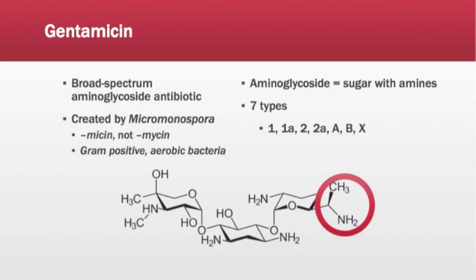Gentamicin comes in seven types, all of which vary only in the specific structure of the circled prosthetic group. In the most widely used formulations, the C1 and C2 subtypes are the most prevalent, with only trace amounts of the other five constituents.